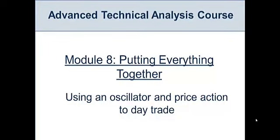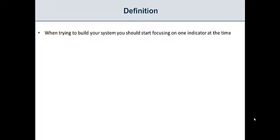Hello traders, welcome to the eighth module of the advanced technical analysis course where we are going to put everything that we have learned together. In this lesson we're going to start with a simple system where we are going to use an oscillator and price action to day trade. When you are trying to build your system, you should start focusing on one indicator at a time. When you're starting out you don't want to clog your charts with lots of indicators — beginner traders often add many indicators that actually show the same things.